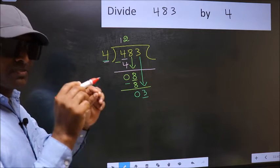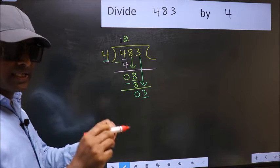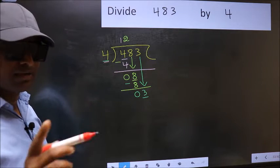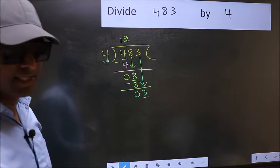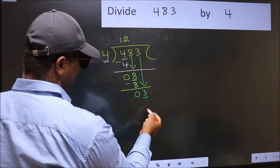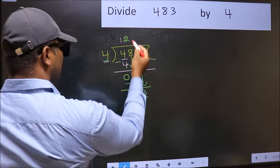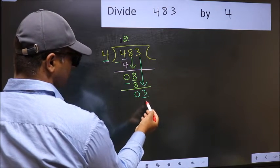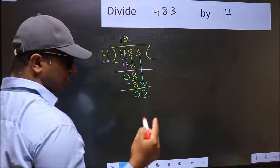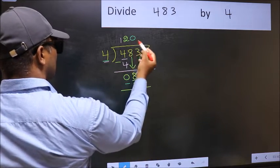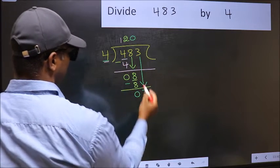Instead, what you should think of doing is: what number should we write here? If I take 1 here, I will get 4 here, but 4 is larger than 3. So what we should do is we should take 0. So 4 into 0 is 0. Now you subtract: 3 minus 0 is 3.